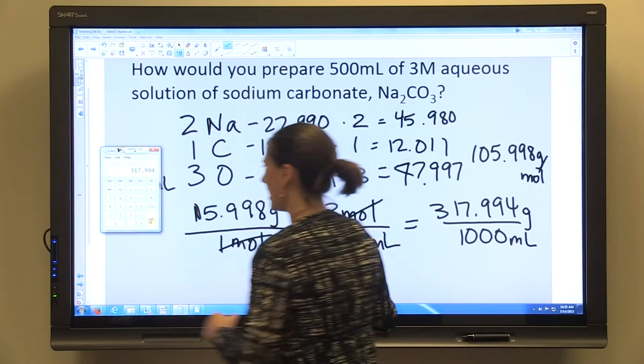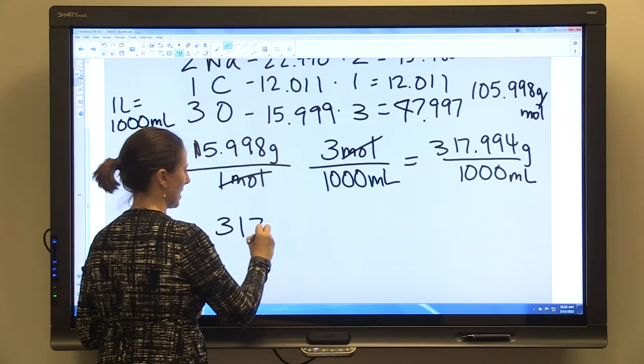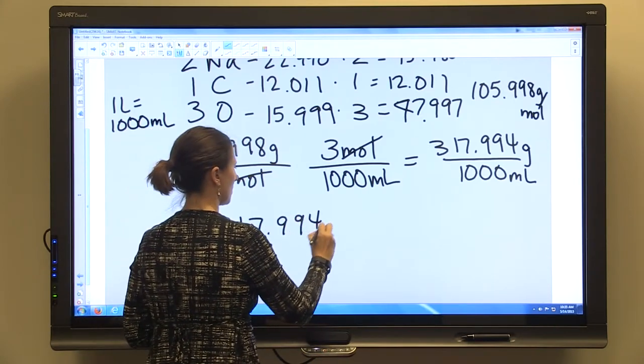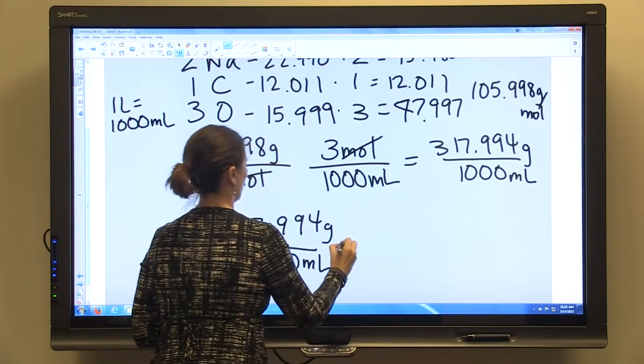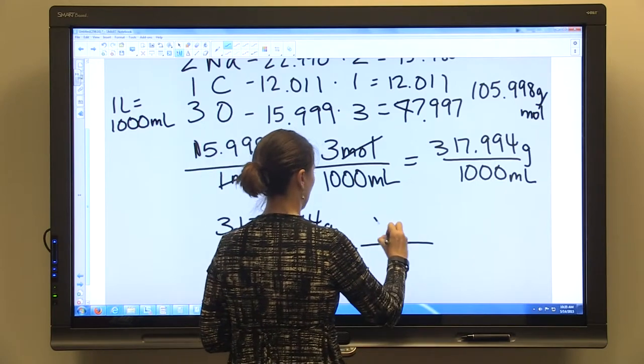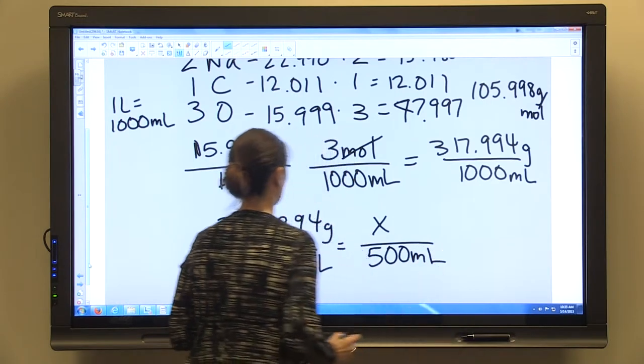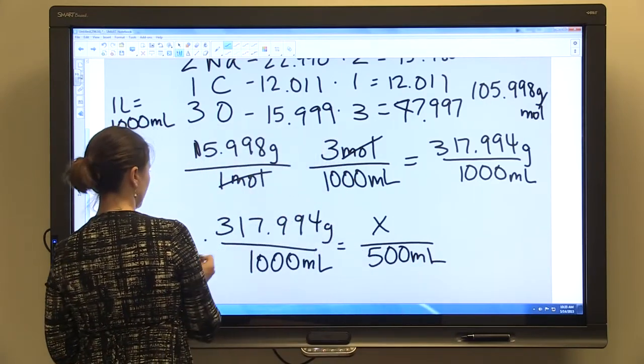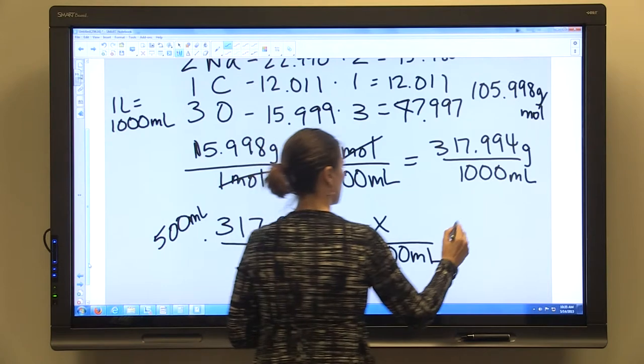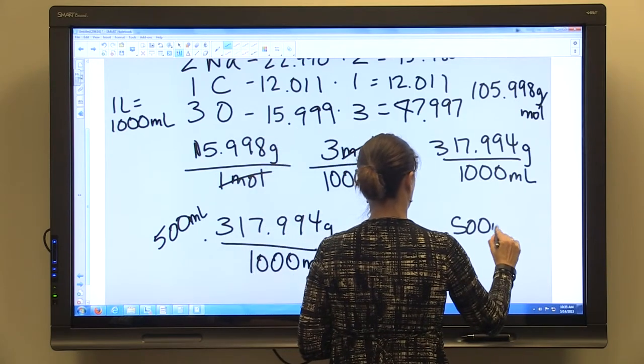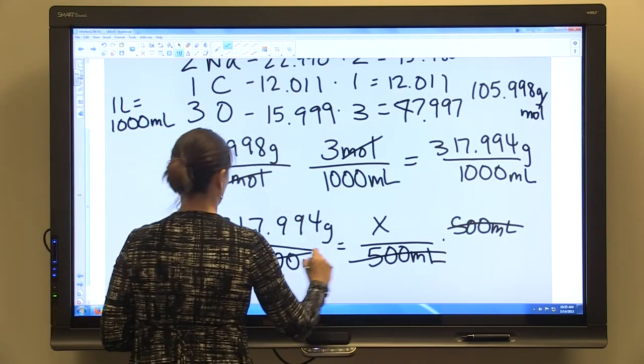Because that is what's going to allow us to set up our proportions. So we're going to set up our proportion at that point: 317.994 grams per 1,000 milliliters, and we need to know how much per 500 milliliters. And so we'll solve for x by multiplying by 500 milliliters on both sides. Those will cancel.